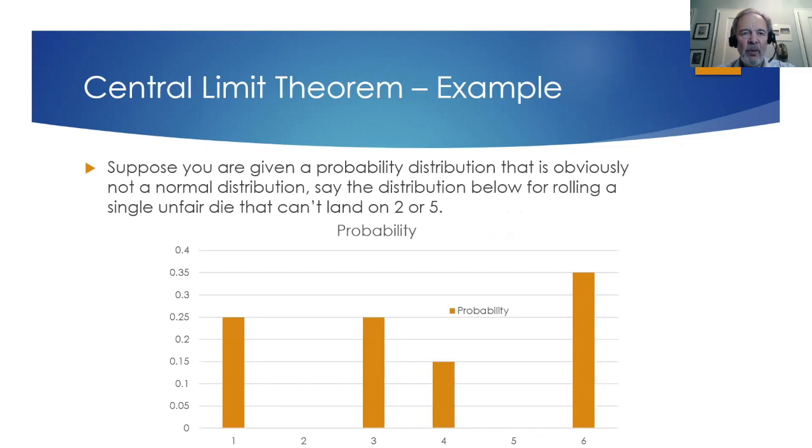Here's an example of the central limit theorem. Suppose you're given a probability distribution that is obviously not a normal distribution. Say the distribution below for rolling a single unfair die or a loaded die that can't land on a 2 or a 5.